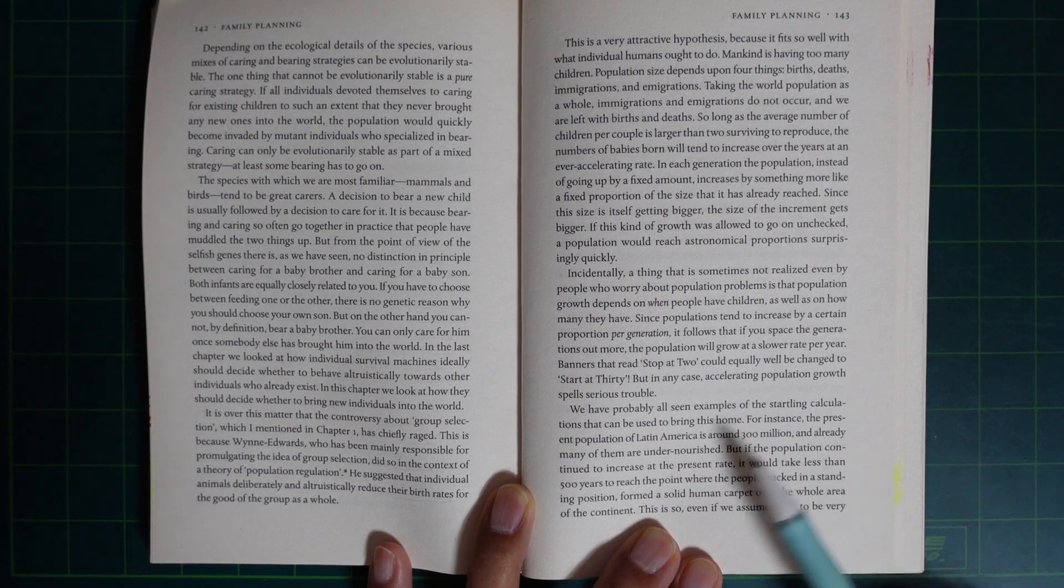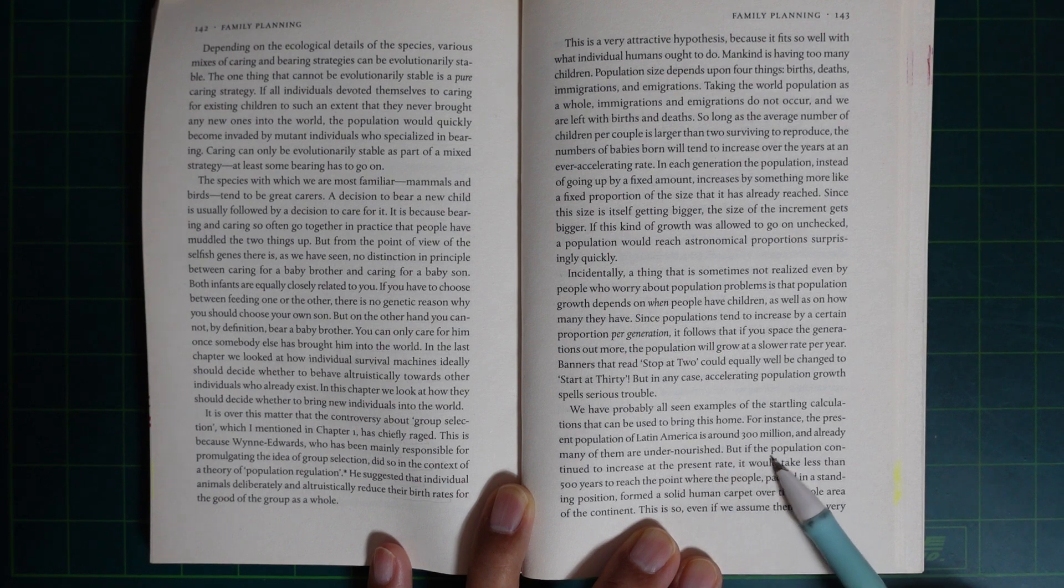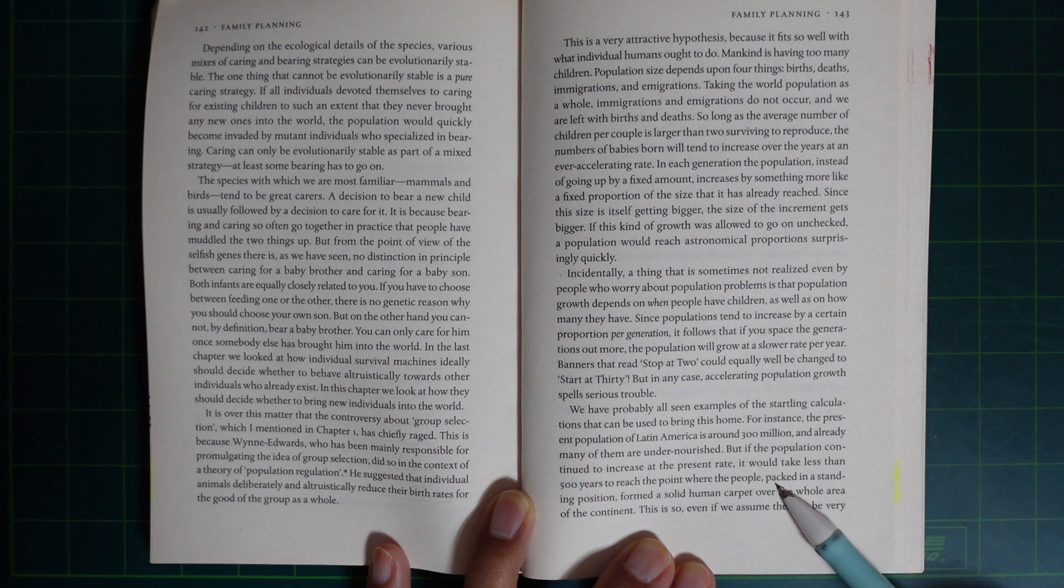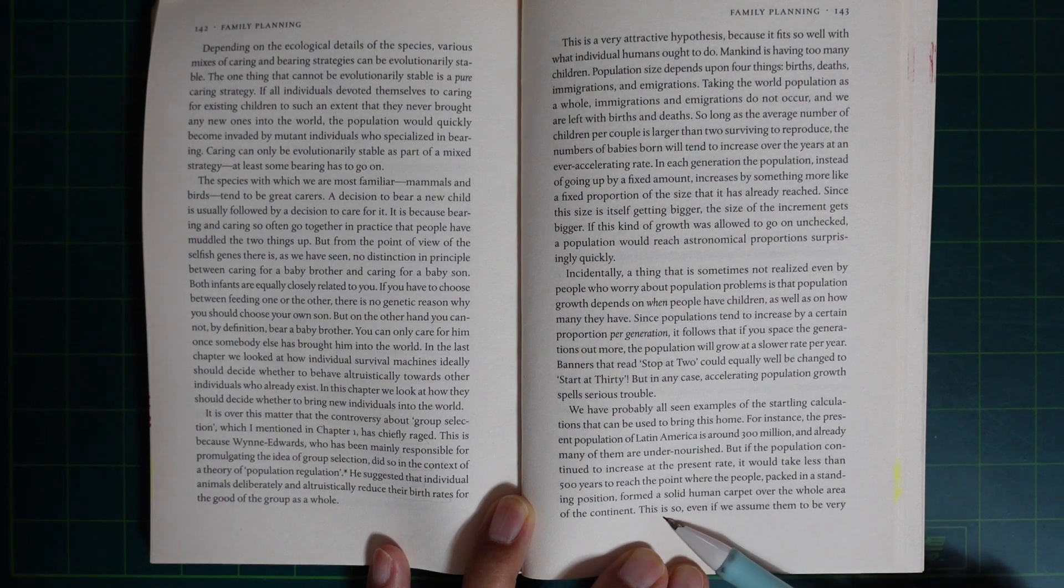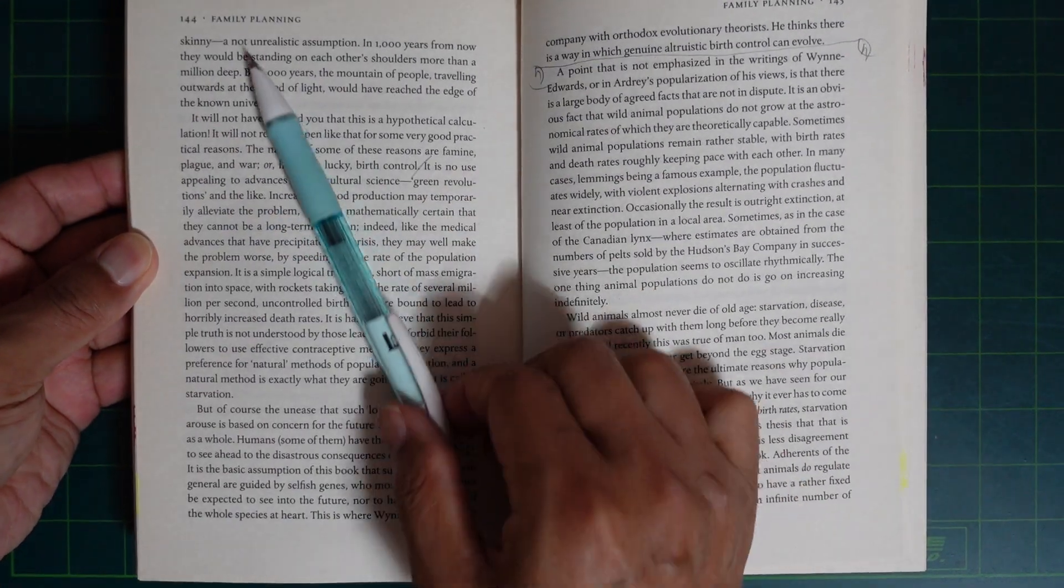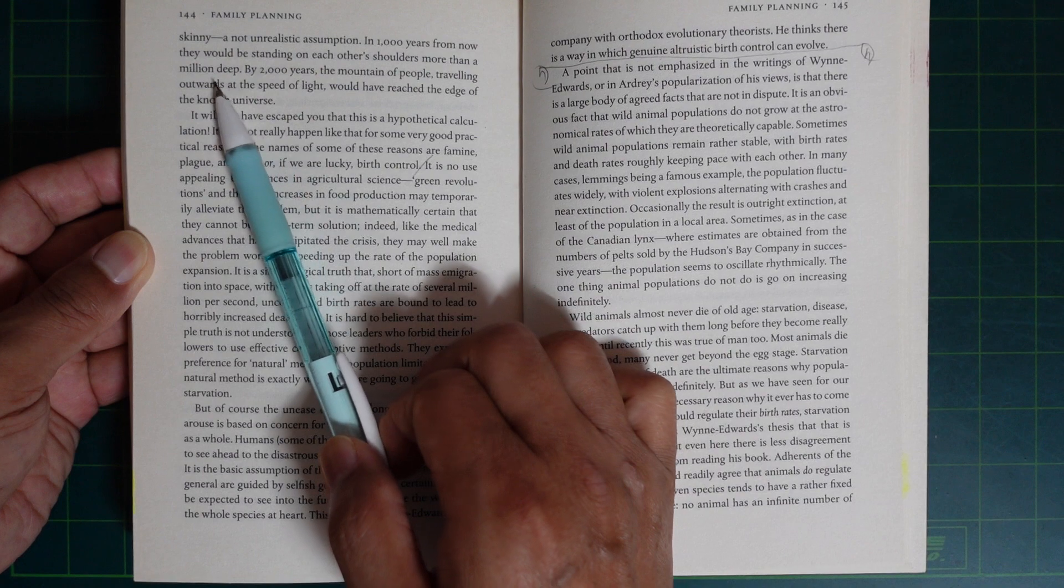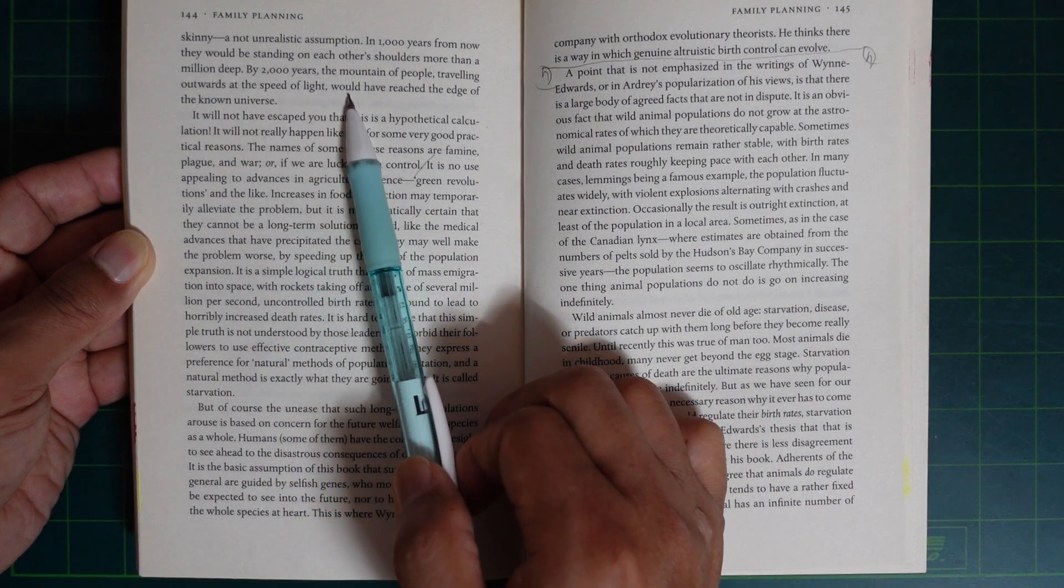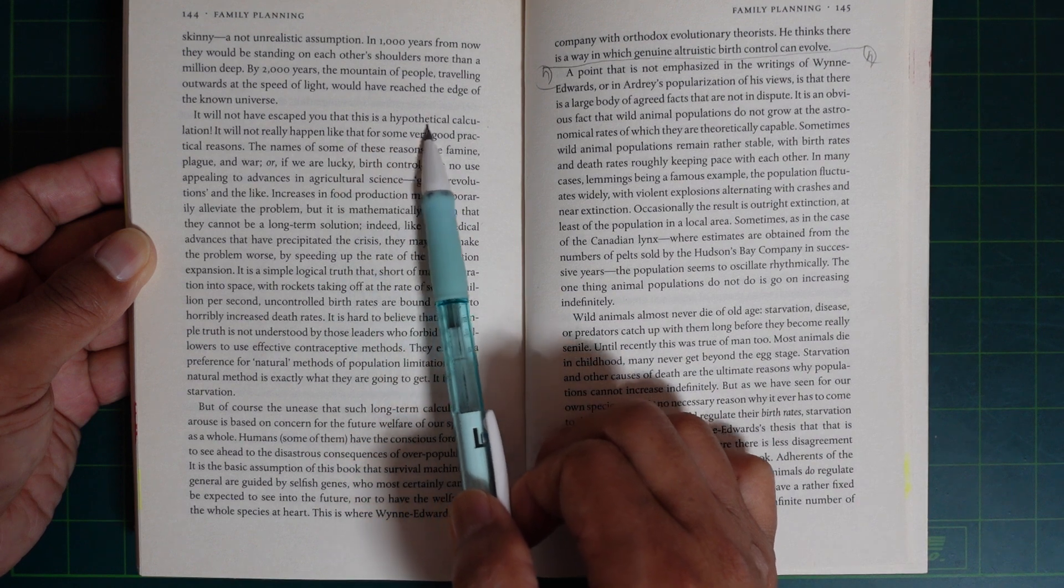But in any case, accelerating population growth spells serious trouble. You have probably all seen examples of the startling calculations that can be used to bring this home. For instance, the present population of Latin America is around 300 million and already many of them are undernourished. But if the population continues to increase at the present rate, it would take less than 500 years to reach the point where the people, packed in standing position, formed a solid human carpet over the whole area of the continent. This is so even if we assume them to be very skinny. On a realistic assumption, in 1000 years from now, they would be standing on each other's shoulders more than a million deep. By 2000 years, the mountain of people, traveling outward at the speed of light, would have reached the edge of the known universe.